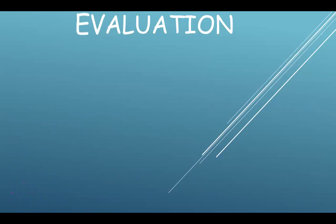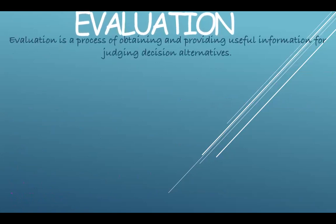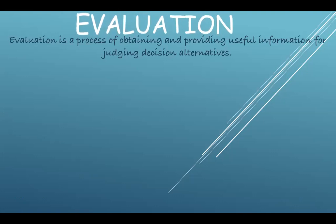Next, we have the evaluation. Evaluation is the process of obtaining and providing useful information for decision, for judging decision alternatives. Evaluation takes place in every walk of life in one or another form. The aim of life may be lost if evaluation is removed from it. Only because of evaluation we can distinguish between good or bad, between worthy or unworthy. The cycle of development revolves around the process of evaluation. Evaluation plays an important role in the teaching learning process. It helps teachers to improve the teaching learning and it's also a continuous process.